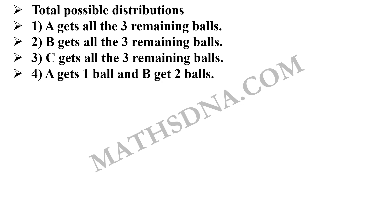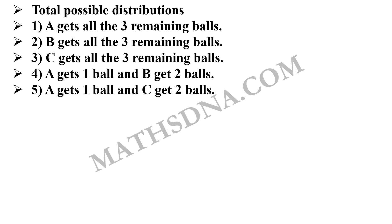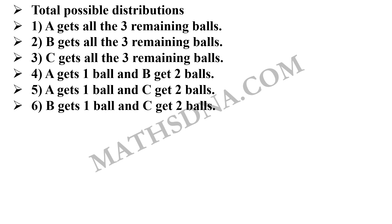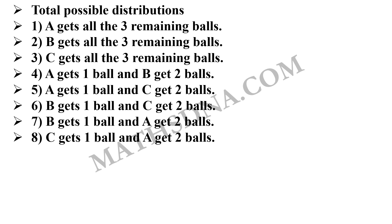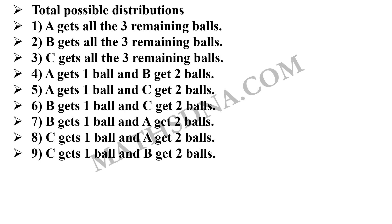Secondly, it is possible that A gets 1 ball and B gets 2 balls. Also, A gets 1 ball and the remaining 2 balls are given to C. This can also be done where B gets 1 and C gets 2. Or B gets 1 and A gets 2. And lastly, when C gets 1 ball and A gets 2 balls. And C gets 1 ball and B gets 2 balls. So these are total 9 possible cases.